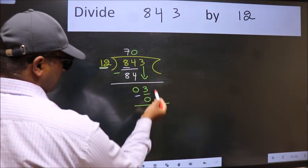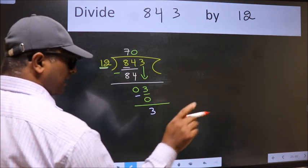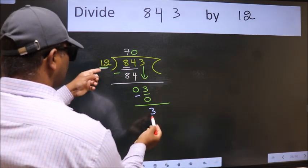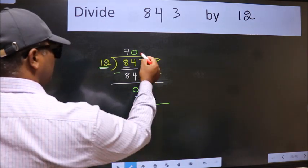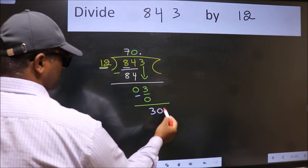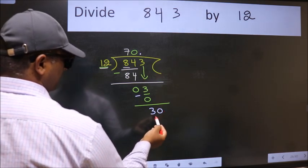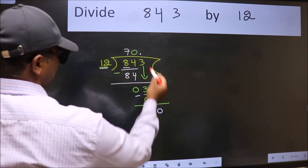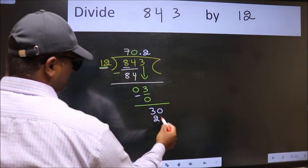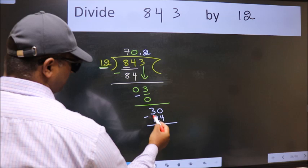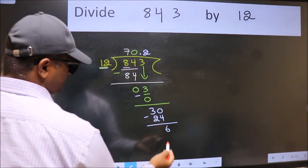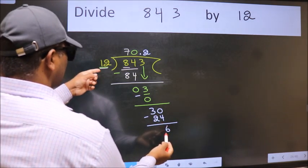Over here, we did not bring any number down, and 3 is smaller than 12. So now we can put a dot and take 0, making it 30. A number close to 30 in the 12 table is 12 times 2, which is 24. Now we subtract and get 6. 6 is smaller than 12.